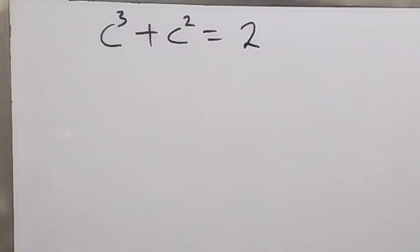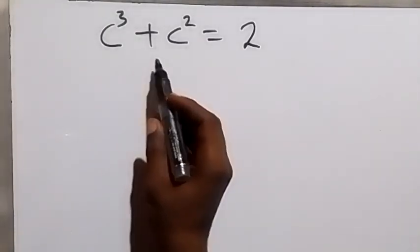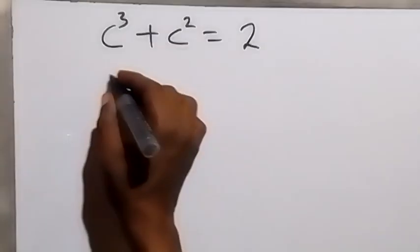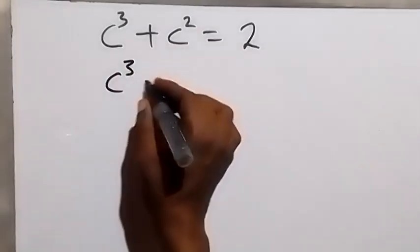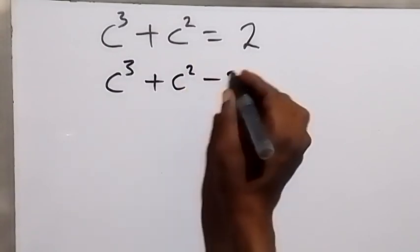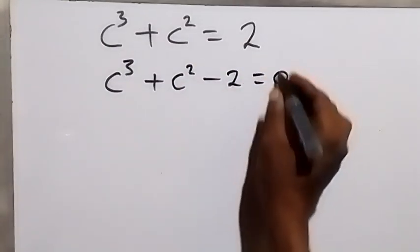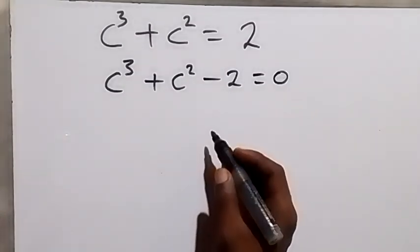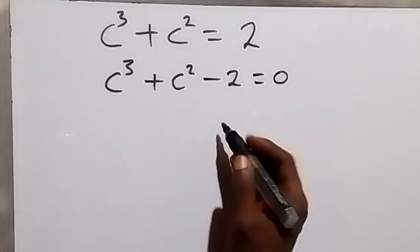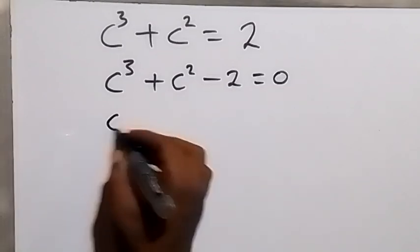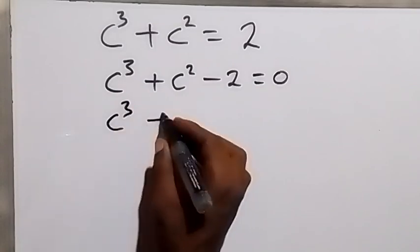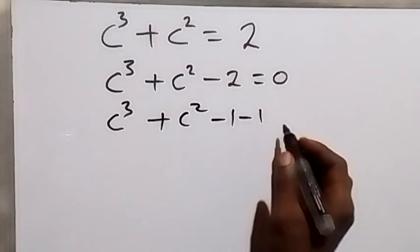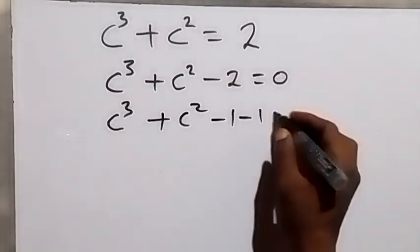Hello, you are welcome. Let's solve this problem: c raised to power 3 plus c squared equals 2. Let's take 2 to this side, then this becomes c cubed plus c squared minus 2 equals 0.